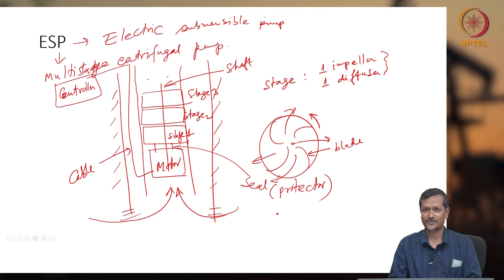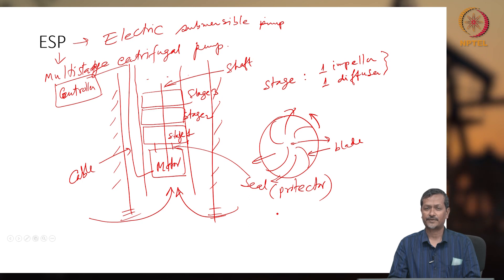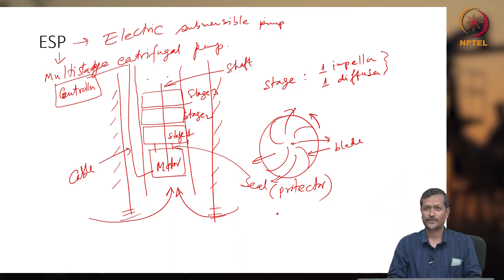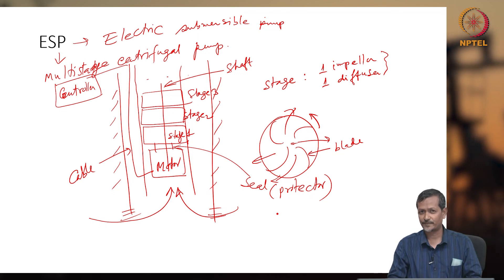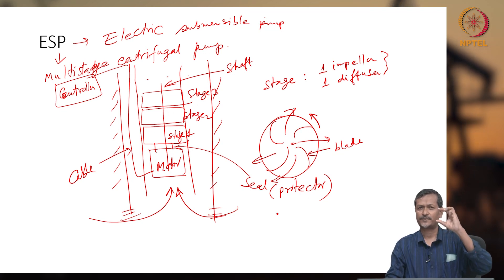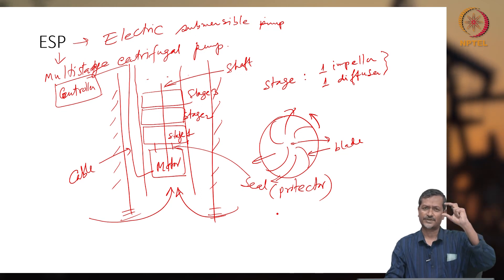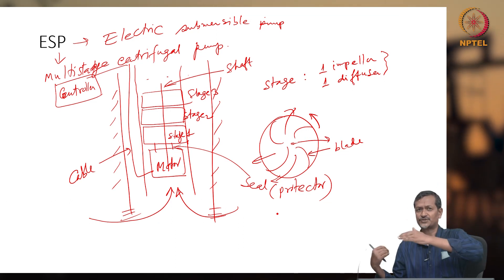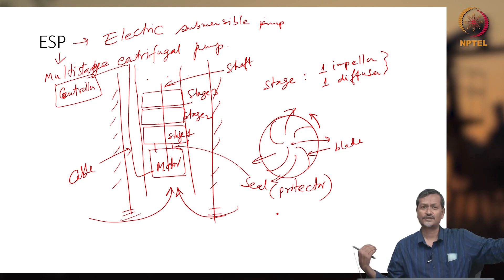Some companies like Chevron make their own seals, and others are also available on the market. Normally, ESP manufacturers like Baker and others manufacture the motor, seal section, stage 1, stage 2. A wellbore may require 100 or more stages, and the total length can equal a two- or three-story building. Each stage is about 1 to 2 inches in height, so 200 stages equals 200 inches, plus seal section, plus motor — making the whole assembly very long.